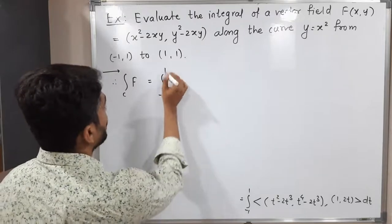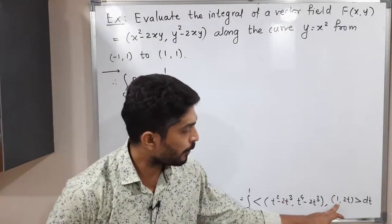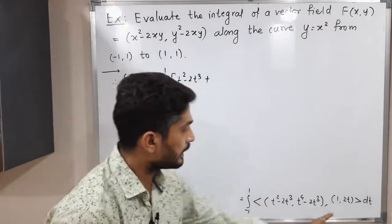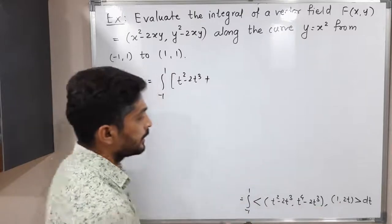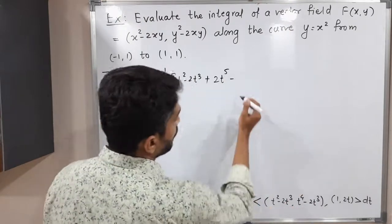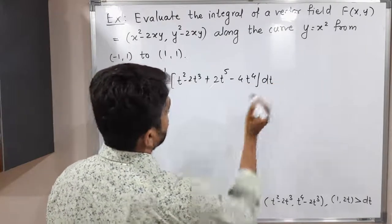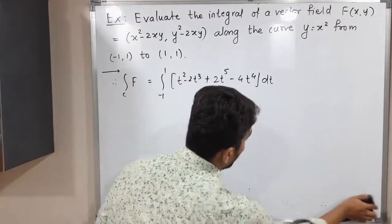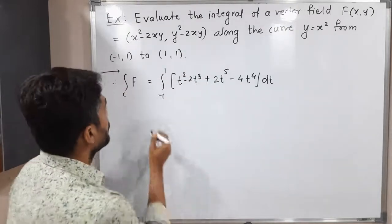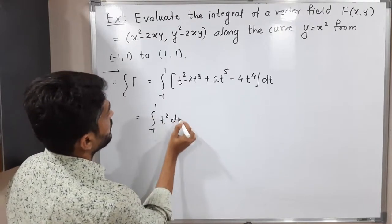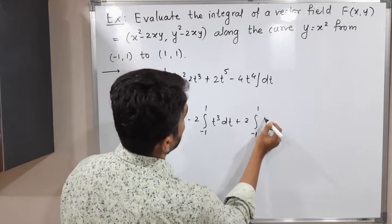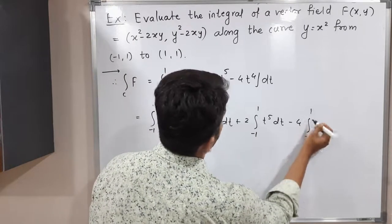Now we find the value of that inner product. The first component times first component gives t² − 2t³, and the second component times second component gives 2t · (t⁴ − 2t³) = 2t⁵ − 4t⁴. So we have the integral from −1 to 1 of (t² − 2t³ + 2t⁵ − 4t⁴) dt, which we split into four separate integrals.